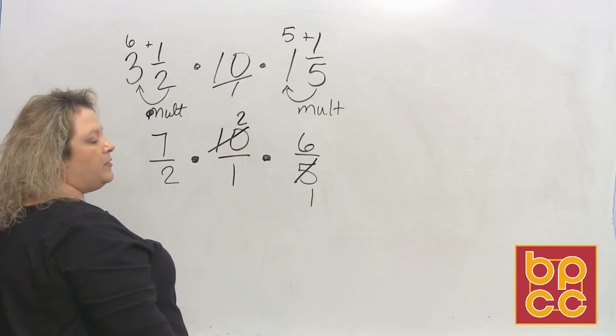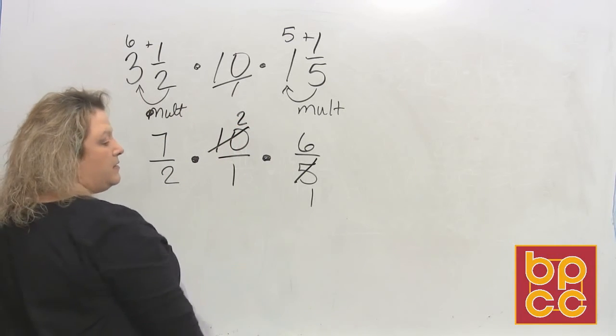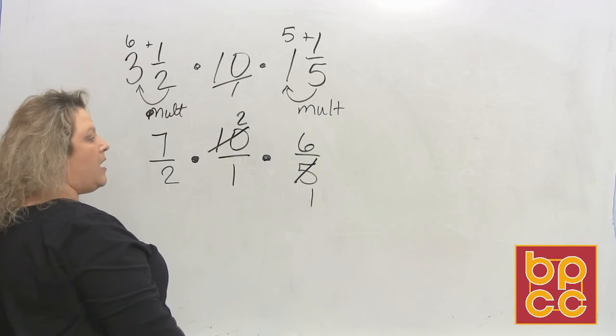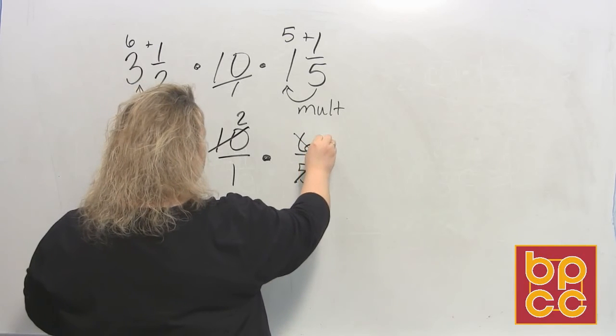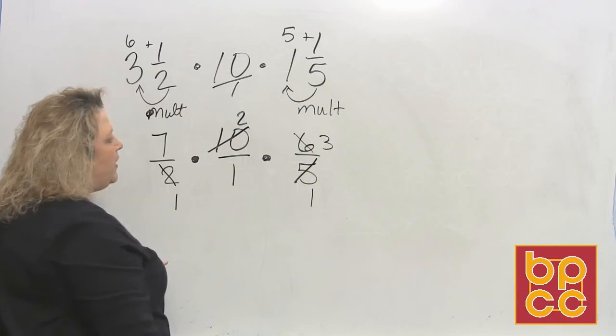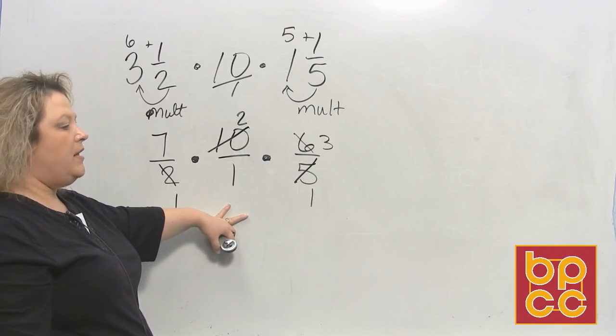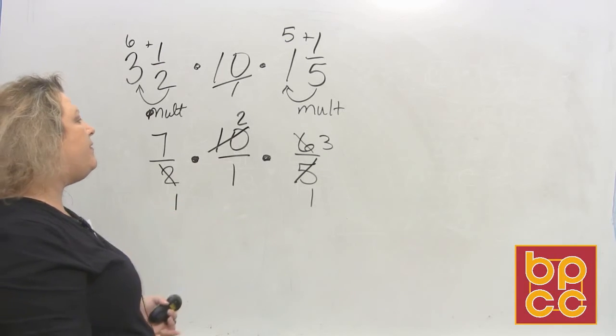Okay, now I'm going to look at what's left. I have a 6. 6 and 2 have something in common. They have a 2. So 2 divides into 2 once, 2 divides into 6 three times. And when I look at this now, all of my denominators are ones. So I can't do anything else with them.